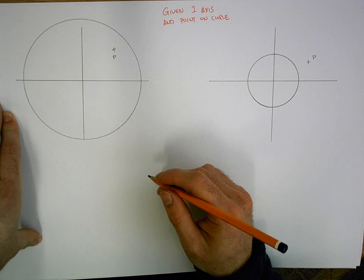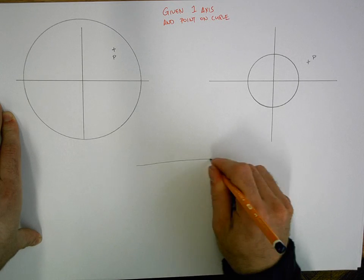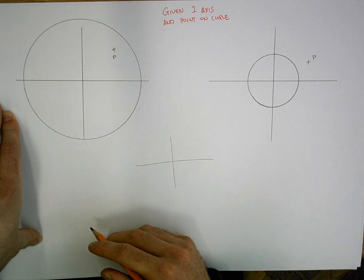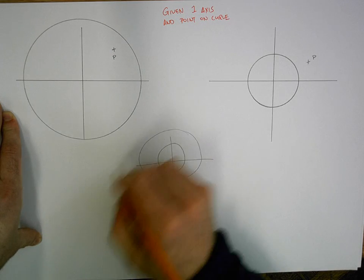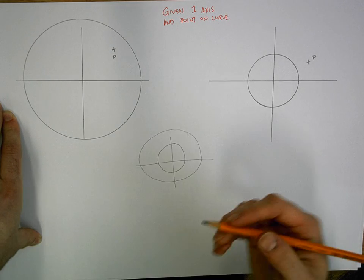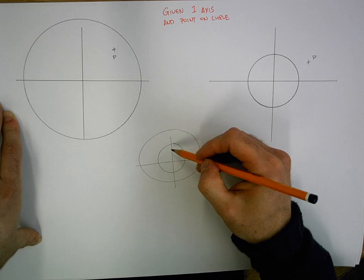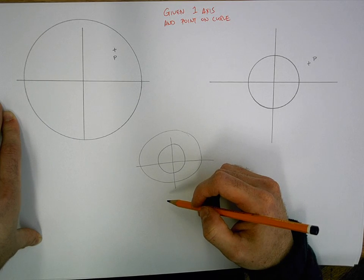Basically what you need is your two axes. If you have your two axes, you draw your central lines. You put in your small circle, your minor circle, you put in your major circle. Then what you do is split it up into sections using your 30 degree set square.